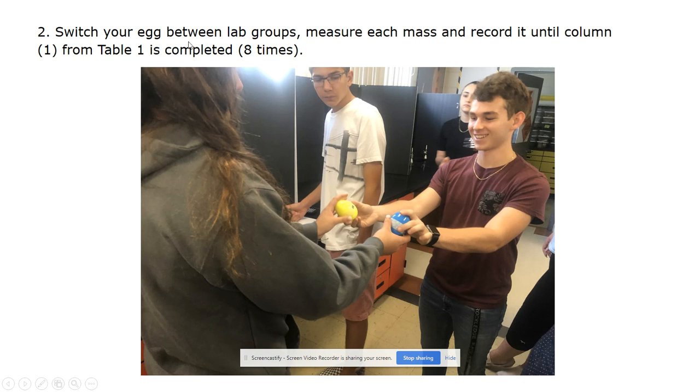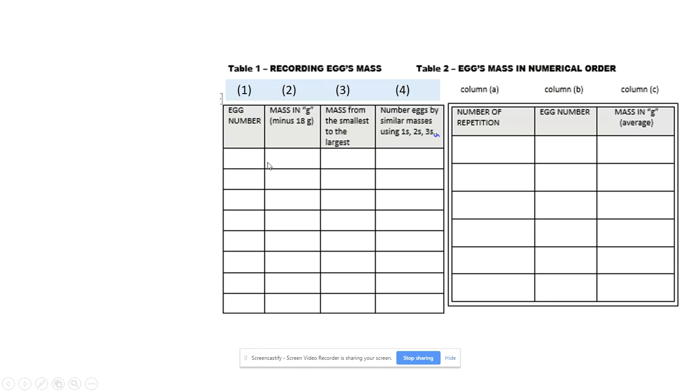Step 2 is to switch your egg between lab groups and measure each mass and record it until column 1 is completely filled with all 8 items. You are going to record the egg number and then record the mass average and deduct 18 from it and record that number in column 2. You are going to do this for all 8 of your samples.